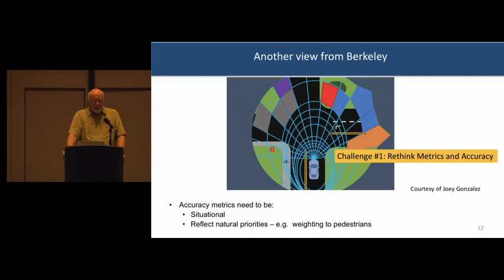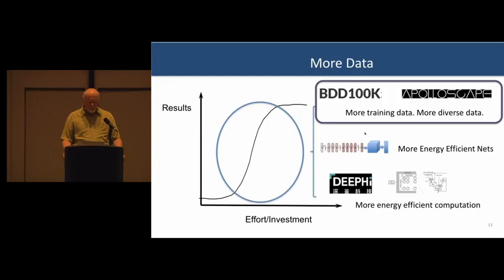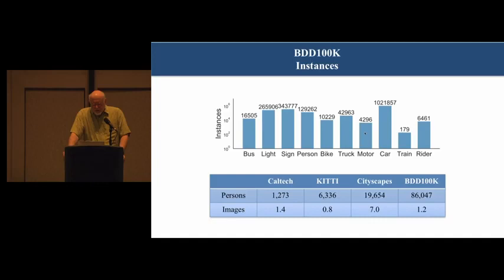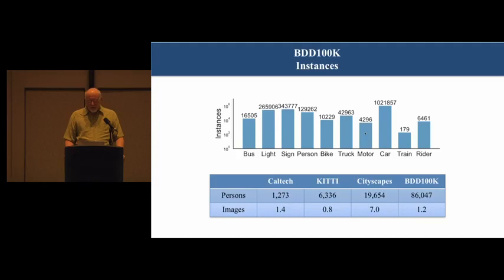Now back to something more familiar: more data. There's some really good news. Fisher Yu, in what I think was a labor of love, has recently released the Berkeley Deep Drive 100K dataset. It's crowdsourced, with 100,000 individual 40-second videos — over 1,000 hours of driving experience — and it's downloadable today. In terms of the number of individual persons or pedestrians, we're weighing in at over 86,000 examples. This is clearly a big advance.